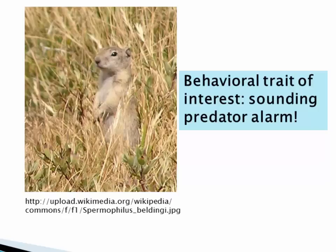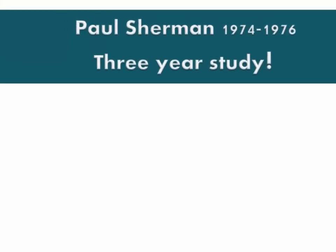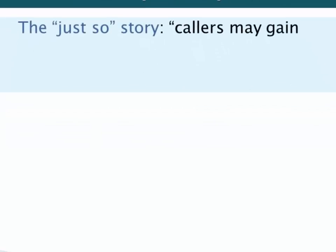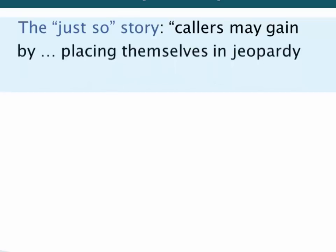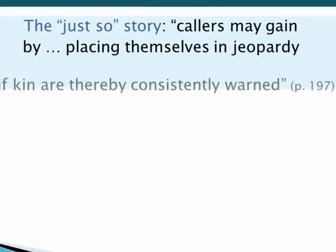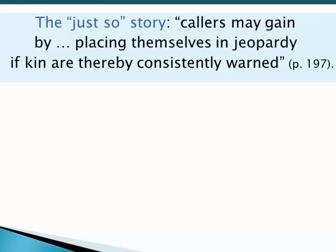Why is it that some squirrels sound the predator alarm? Paul Sherman undertook a three-year study of these ground squirrels and collected careful quantitative evidence sorting through six different alternative hypotheses. The just-so story behind his study is the proposition that those callers may be gaining inclusive fitness by placing themselves in jeopardy, if the benefits of their alarm calls go mostly to their close genetic kin.